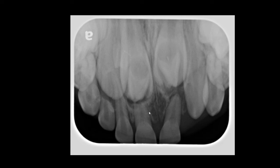Now let's look superior to the roots of the primary central incisors — there we find permanent central incisors 8 and 9. And just lateral to that we have permanent lateral incisors, so this would be 7 and that is 10. But if you look carefully at the crowns of the central incisors, what do you think is going on? You see the overall outline of the crowns, and then there's another crown-looking, developing tooth going on. Would you consider dens in dente, or what's going on? These are two supernumerary teeth that are located in the same area.